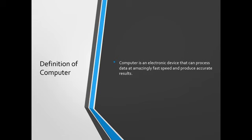This means the computer has a lot of electronic devices that can process data in the information field and give us accurate results which we have desired and required. To summarize: a computer is an electronic device that can process data at amazingly fast speed and produce accurate results.